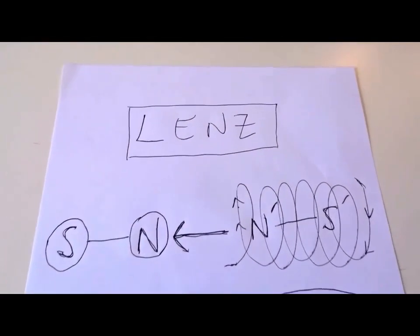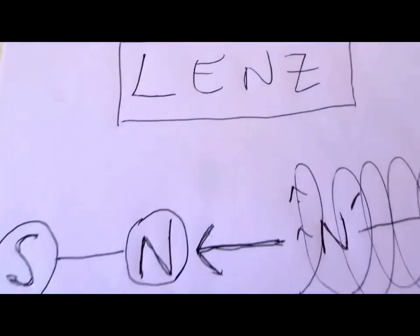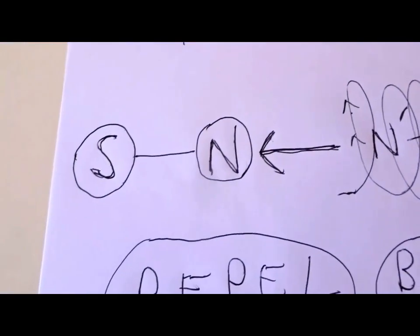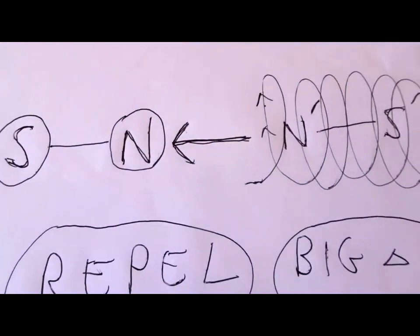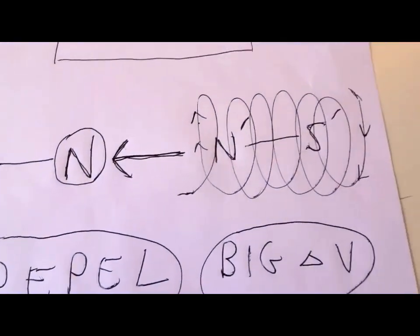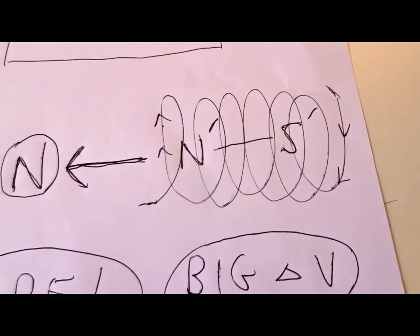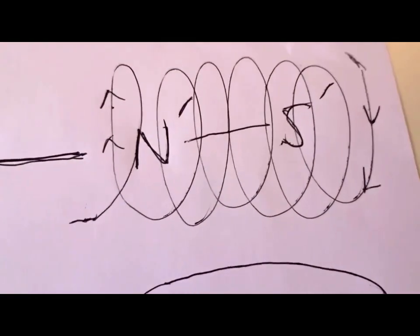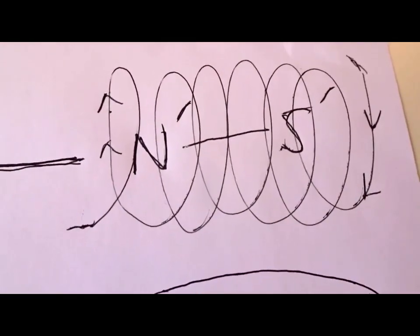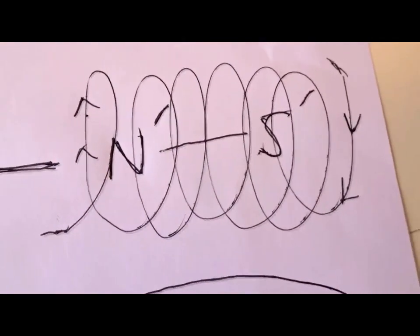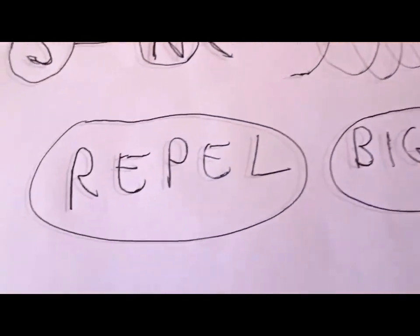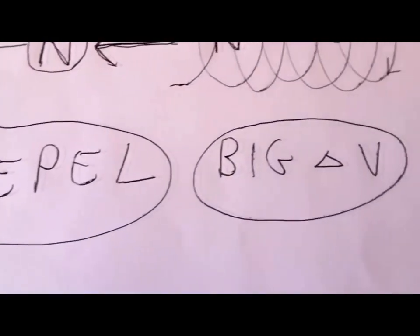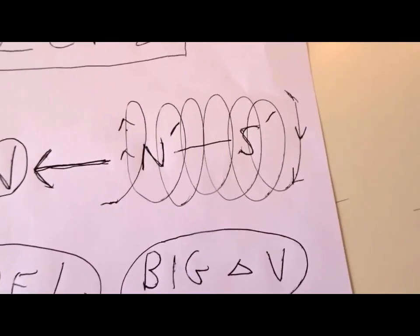Another important force in electromagnetic physics is called the Lenz force. We have a magnet laying on its side with its north and south poles, and as we push toward that magnet a coil of copper wire or some other conductor, it creates a repulsive magnetic field — N' and S' — due to motion of electrons through the wire, which repels the first field, and we get a big change of velocity of electrons in the wire.